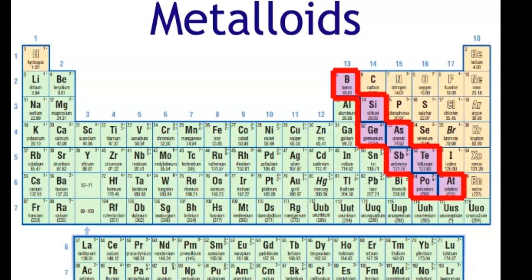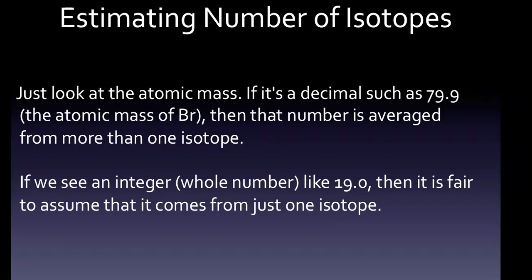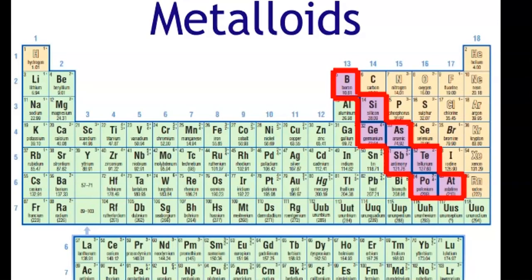The majority of known elements are metals. There are 17 non-metals and eight metalloids. Metals are located on the left side of the periodic table, non-metals on the right, and metalloids in between the two. That's another way you can think about it.